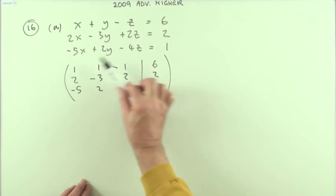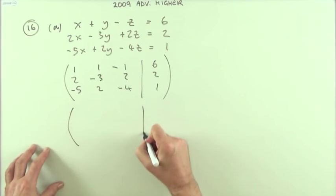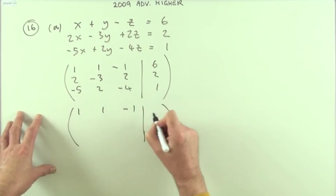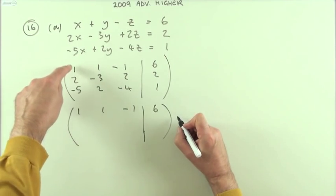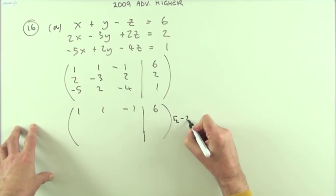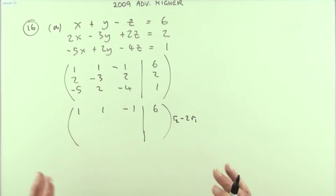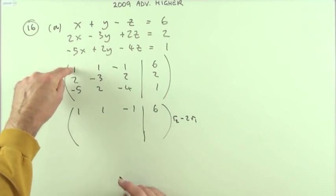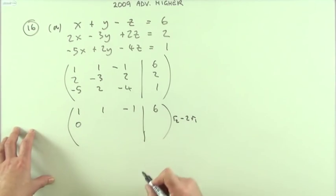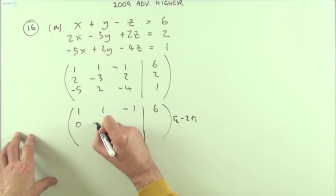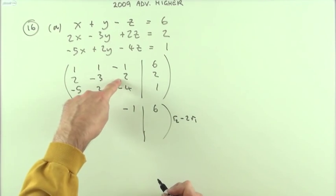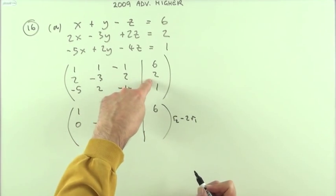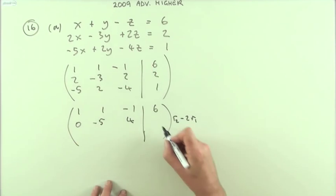It only takes two steps to get there. First, leave the top row alone. To make that element zero, take away two of row one from row two. Doing this carefully: two take away two is zero, negative three take away two is negative five, two take away negative two is four, and two take away twelve is negative ten.